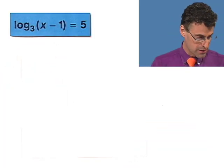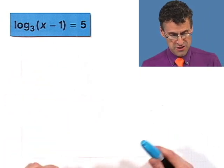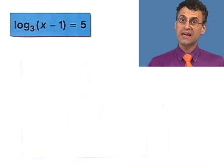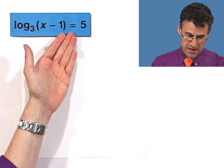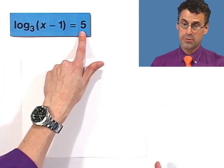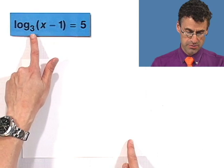Log base 3 of the quantity x minus 1 equals 5. Well, again, let's just think about what log is. Log is an exponent. So there's my exponent that I have to raise my base 3 to in order to give me that.